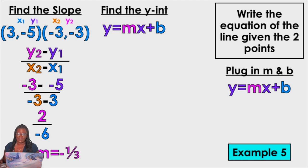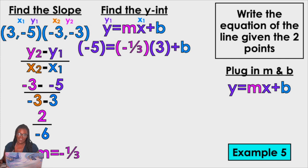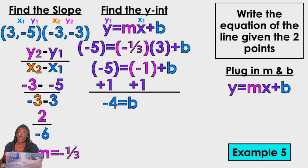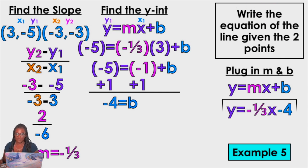I need to plug that in. I need a Y1, an M — which I already have — and an X1. Y1 is negative 5, M was negative 1 third, and X1 is 3. What's 1 third of 3? Don't let the fraction freak you out — it's 1. But it's a negative 1 in this case because we multiply by negative 1 third. Get rid of that negative 1 by adding 1 to both sides. We get negative 4 equals B. Now that I have M and B: Y equals negative 1 third X minus 4.